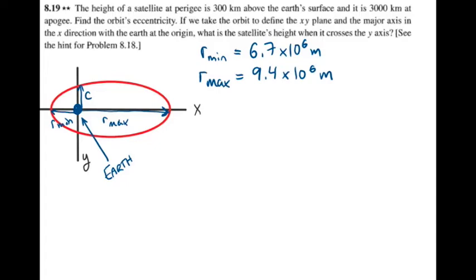With those numbers out of the way, we can use equation 8.50, which relates the constant c, the minimum and maximum radii, and the eccentricity of the elliptical orbit, like so.